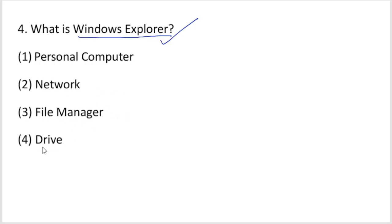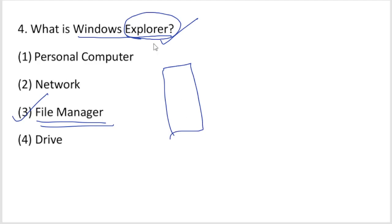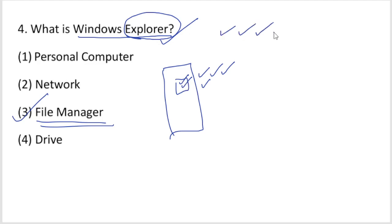Next question: what is Windows Explorer? Windows Explorer is a file manager for your personal computer or network drives. Just like on an Android smartphone you use a file manager to manage internal memory, external memory, documents, video files, and music files — similarly in Windows, Windows Explorer is the file manager, showing C drive, D drive, E drive, downloads, pictures, videos, and documents.